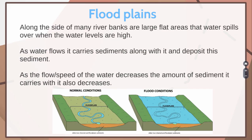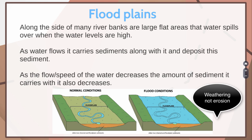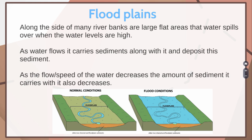Floodplains are large flat areas along the side of many riverbanks where water spills over when water levels are high. This can happen from heavy precipitation or in the spring when snow melts. As the water flows, it carries sediment along with it and deposits the sediment along the sides. As the flow or speed of the water decreases, the amount of sediment it carries also decreases. When flowing water is moving really fast, it picks up rocks, dirt, and sediment. As it starts to slow down, that sediment starts to fall and we see more clear water.